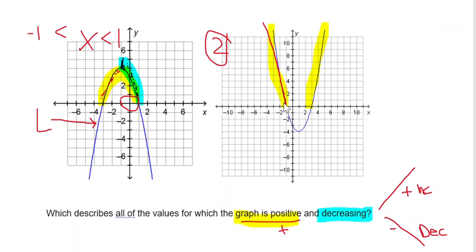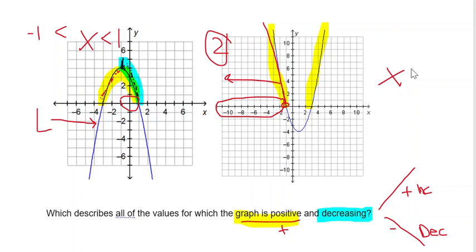But once it gets to that x-intercept, after the x-intercept it drops below the x-axis, which means it's negative. So we're only wanting the positive part that's decreasing. That's everything to the left of this x-intercept. To the left of is less than, so everything less than the x-intercept at negative 1 would represent positive and decreasing.